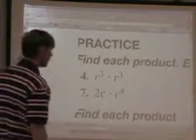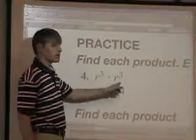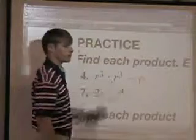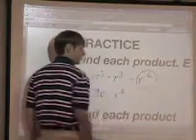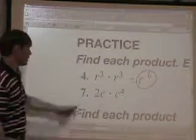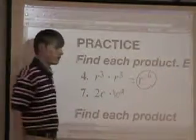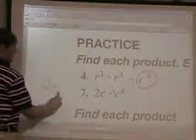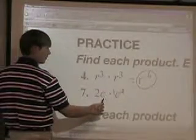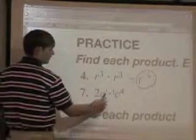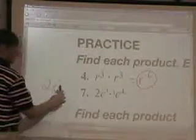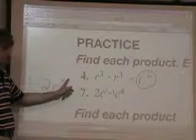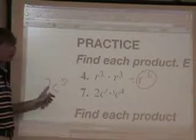Now we're multiplying monomials: r cubed times r cubed. Your base is going to stay r, and you add the exponents — three plus three is six. Now the second one: 2c times 1c to the fourth. What's 2 times 1? Two. The base stays c. C is understood to be to the first power, so c to the one times c to the fourth is c to the fifth. The answer is 2c to the fifth power — not 2c5.